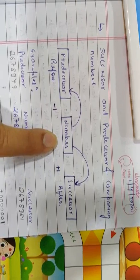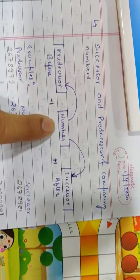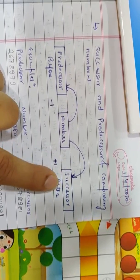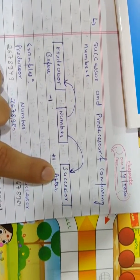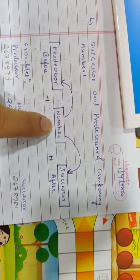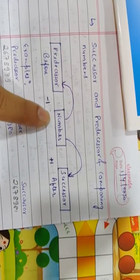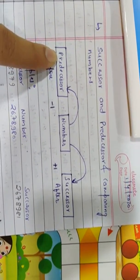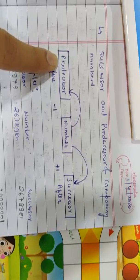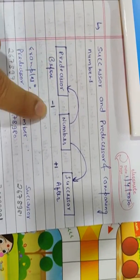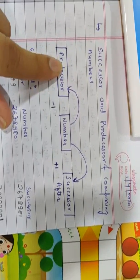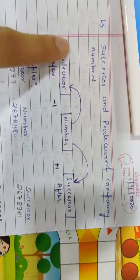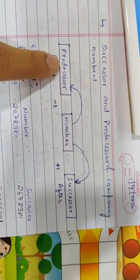One more method — a shortcut method which we can learn. 'Success' means 'aage badhana' — to move forward, to achieve. So we have to go forward: plus 1. And for predecessor, P for predecessor and P for 'piche' — P for 'piche' means behind. So predecessor means the number before — 'piche wala number' — minus 1. This is the shortcut method to learn predecessor and successor.